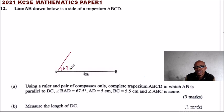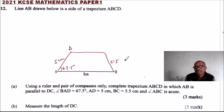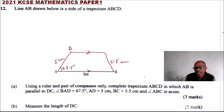Angle BAD is 67.5 degrees. AD is 5 centimeters, BC is 5.5 centimeters, and these two lines AB and DC are parallel. Angle ABC is an acute angle — an acute angle is an angle that is less than 90 degrees.